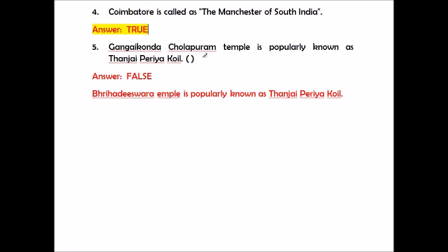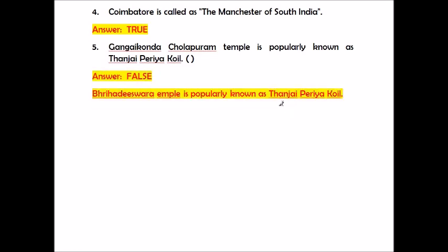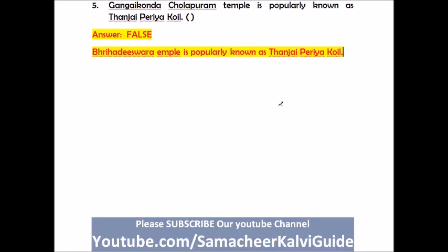Question number five: Gangaikonda Cholapuram temple is popularly known as Tanjai Periya Koil. Answer is False — it is the Brihadeeswara Temple which is popularly known as Tanjai Periya Koil.